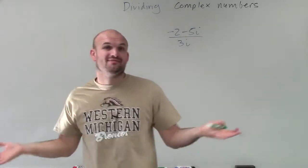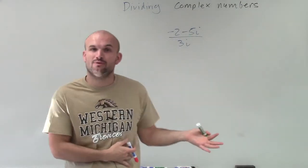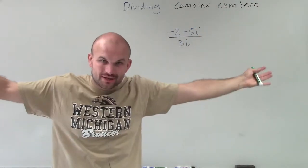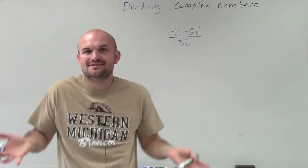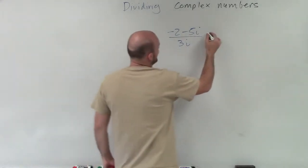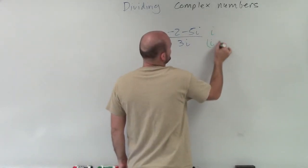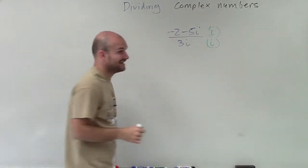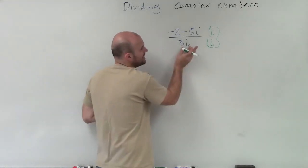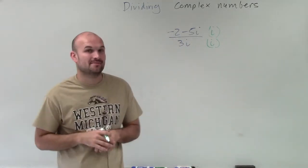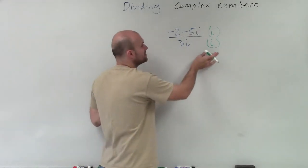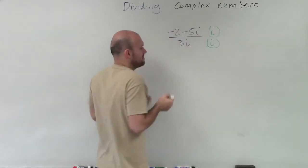So now in this case, we have the same thing — we have i in our denominator, so we're going to want to eliminate that. But now, instead of just having a monomial, we have a binomial in our numerator. It doesn't matter. When we only have a monomial in the denominator, we just need to eliminate the i by multiplying by i over i — that's going to be our theme for dividing complex numbers with a monomial denominator.